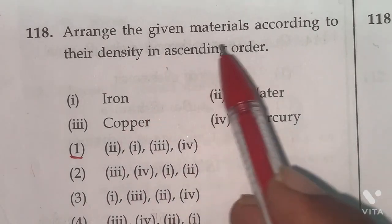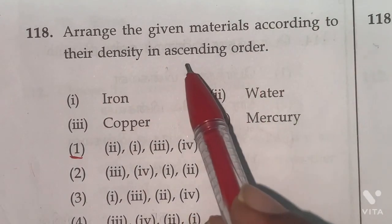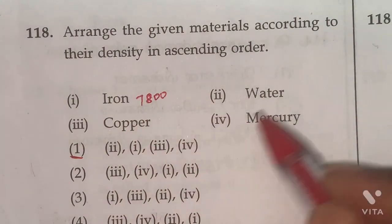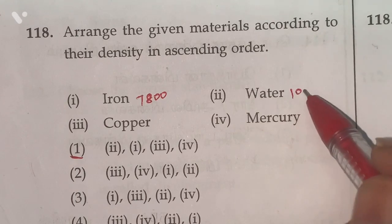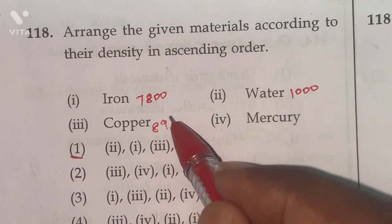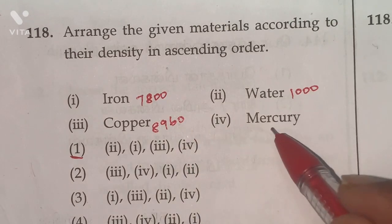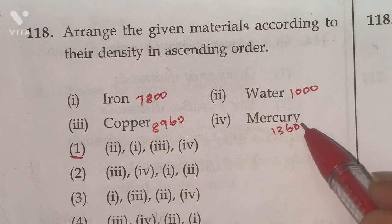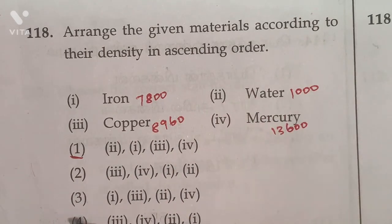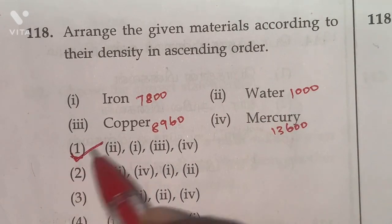118th. Arrange the given materials according to their density in ascending order. Density of iron 7,800 kg per meter cube, density of water 1,000 kg per meter cube, copper density 8,960 kg per meter cube, mercury 13,600 kg per meter cube. So if you arrange in ascending order, we will get option 1. So 1 is the right answer.